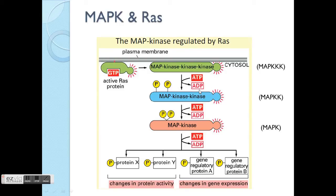This whole thing looks complicated but actually it's a cascade of phosphorylation. The green kinase phosphorylates the blue kinase, which then causes phosphorylation of the pink kinase — it's a chain reaction. This last one then causes phosphorylation of different proteins and also changes in gene expression. The general names for everyone involved in this MAPK pathway are straightforward — MAPK is the last one in this particular pathway.